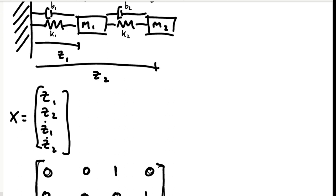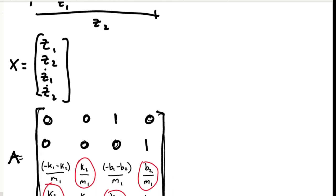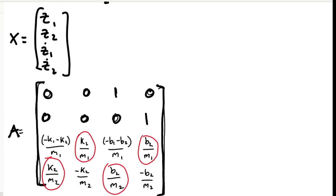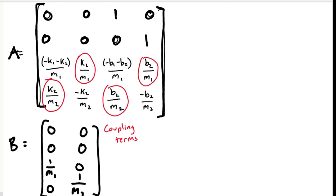We might want to design a controller which decouples the dynamics of the two masses, making them behave as if they were not attached. You can see in the uncontrolled system here, coupling terms that mean that one mass, the position of one mass, will affect the position of another mass.